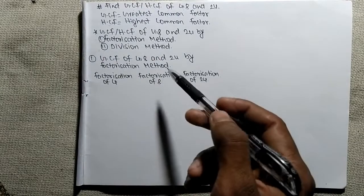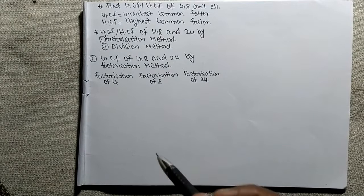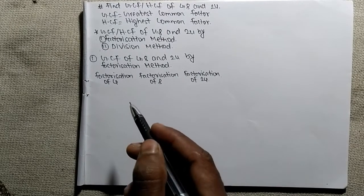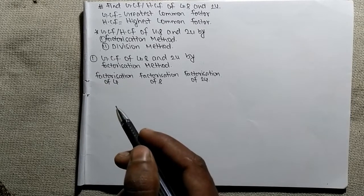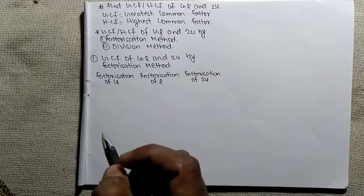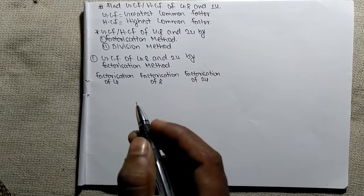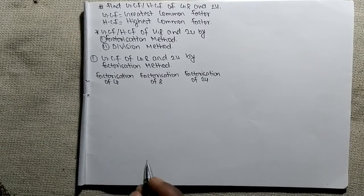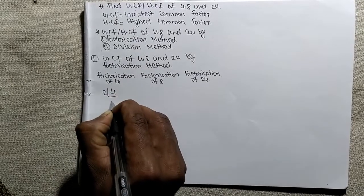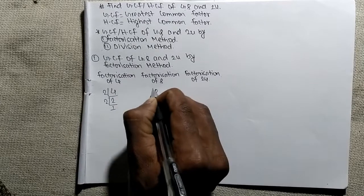Let's find out GCF of 4, 8 and 24 by factorization method. While finding GCF or HCF by factorization method, we have to take the prime factors of all the given numbers — that is 4, 8 and 24 separately. Let's take out the prime factors of the first element, which is 4. It is 2 times 2 means 4, and 2 times 1 means 2.